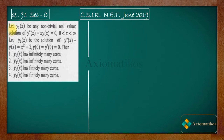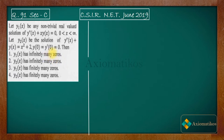Let y1(x) be any non-trivial real valued solution of y''(x) + x·y(x) = 0, where x is in (0, ∞). Let y2(x) be the solution of y''(x) + y(x) = x² + 2 with given initial conditions. The question asks about the solutions — whether they have infinitely many zeros or finitely many zeros.